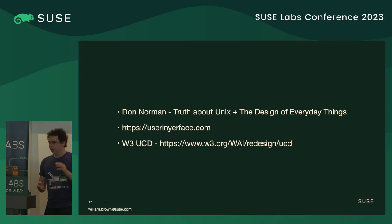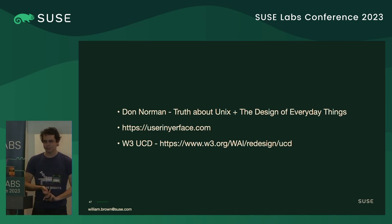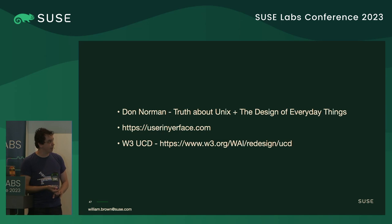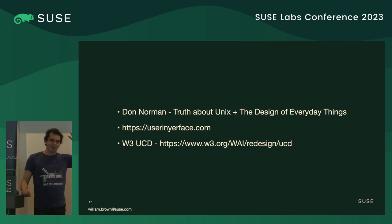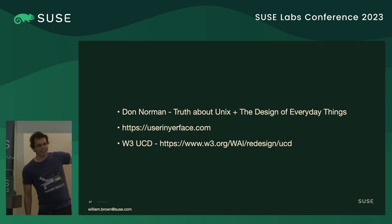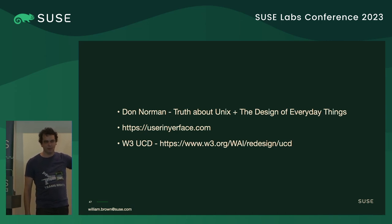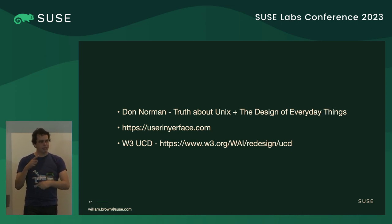For extra resources: Don Norman has great material. There's a paper called "The Truth About Unix" — a fun read about psychological failures of the Unix command line and ways to improve it. "Design of Everyday Things" is a great book. W3's UCD site has resources too. I really recommend userinyourface.com — just go to that website. It's a site of anti-patterns in design that will make you want to tear out your hair. It's a wonderful way to learn about what made you think you should click one thing versus another.